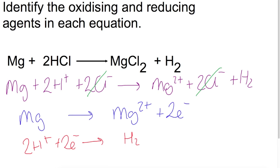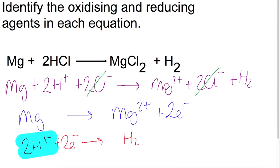Looking at the oxidising and reducing agents: the oxidising agent is the one which gets reduced — so that is H⁺. The reducing agent is the one that gets oxidised — so that is Mg.